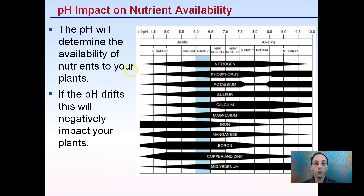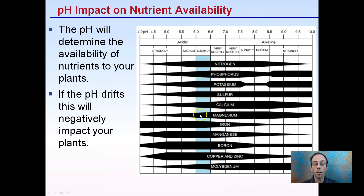pH is important because it determines the availability of nutrients to your plants. If the pH drifts, this will negatively impact your plants. That slightly acidic range is typically where we want to keep pH, because most nutrients are at their greatest availability there. For example, calcium drops off as you get more acidic, and as you get into the basic range, iron and manganese will really drop out. That's why we want to shoot for that slightly acidic pH.